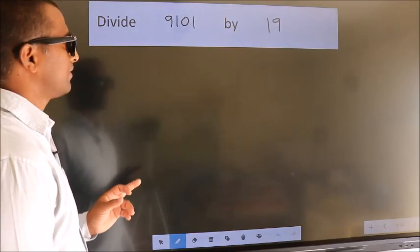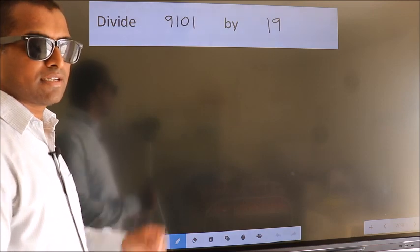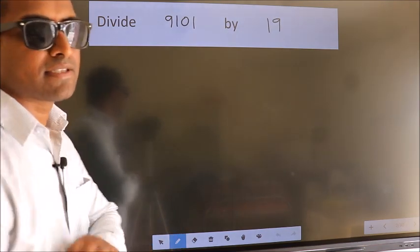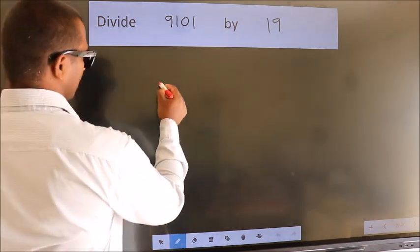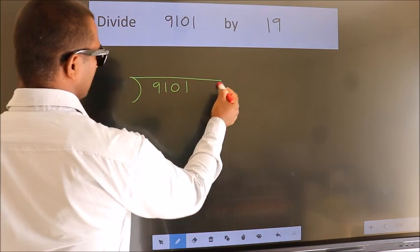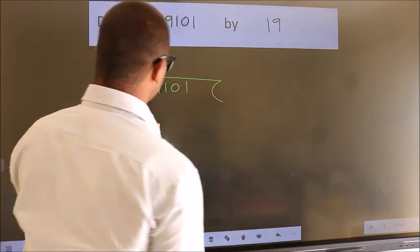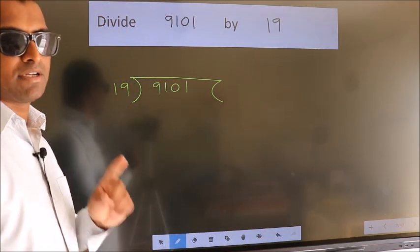Divide 9101 by 19. To do this division, we should frame it in this way. 9101 here, 19 here. This is your step 1.